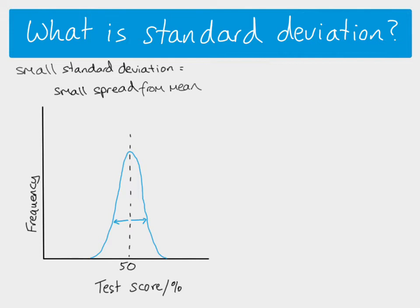A small standard deviation means that the data in your data set shows a small spread from the mean. What that means is that the data is more reliable — as in, if you're looking at the mean and using it to give you insight into your data, then because all the values are very close to the mean, the mean you've got is more reliable in terms of estimating what's going on.